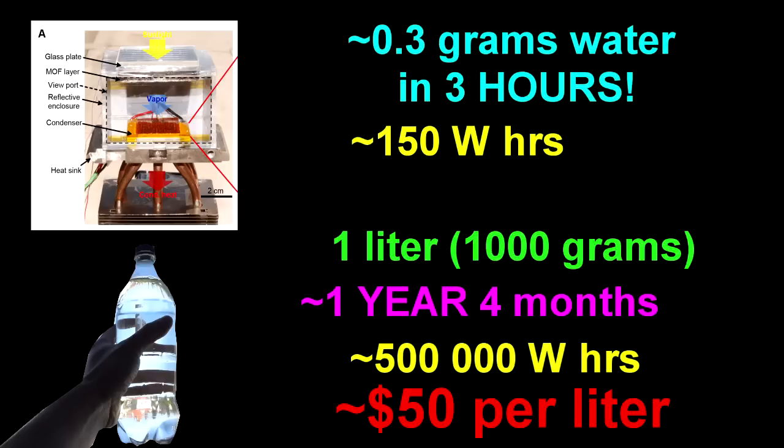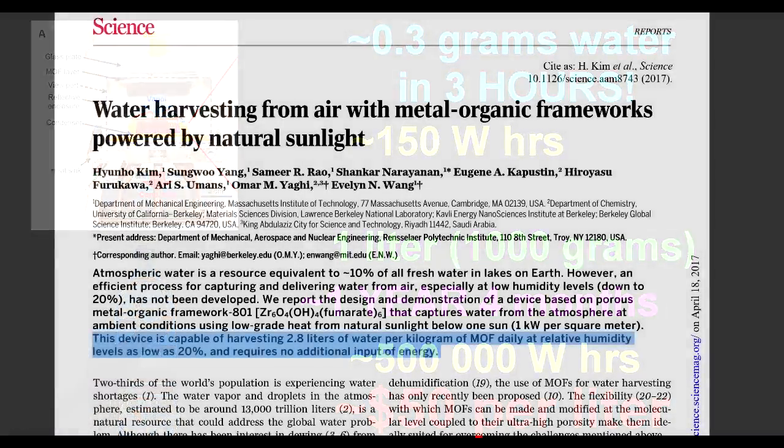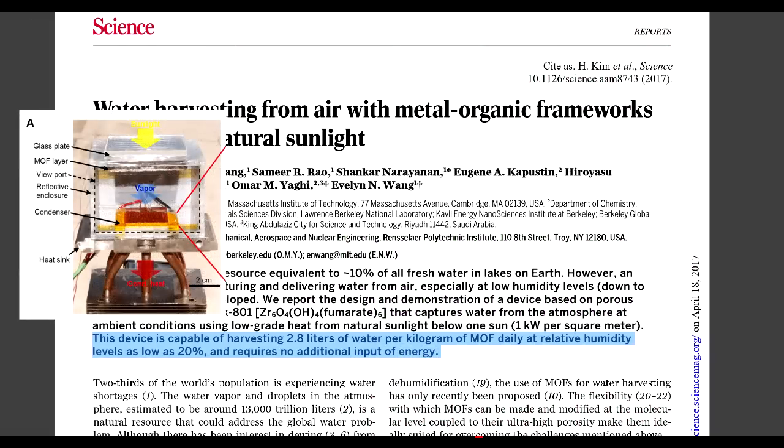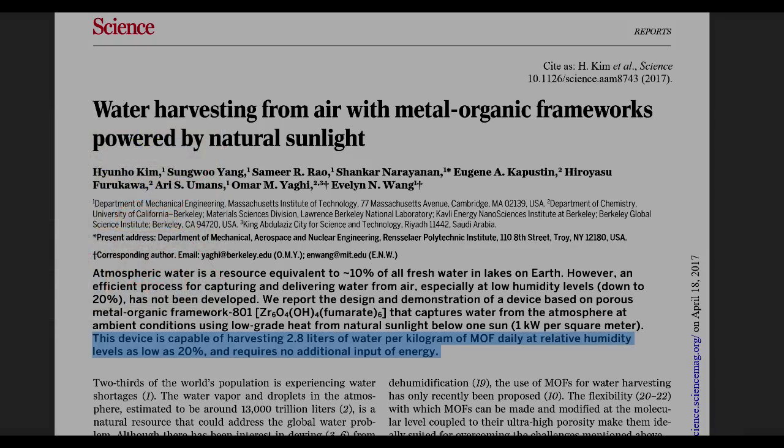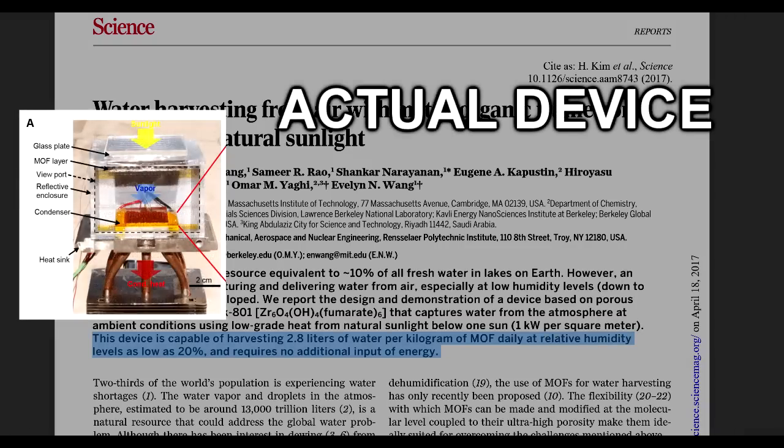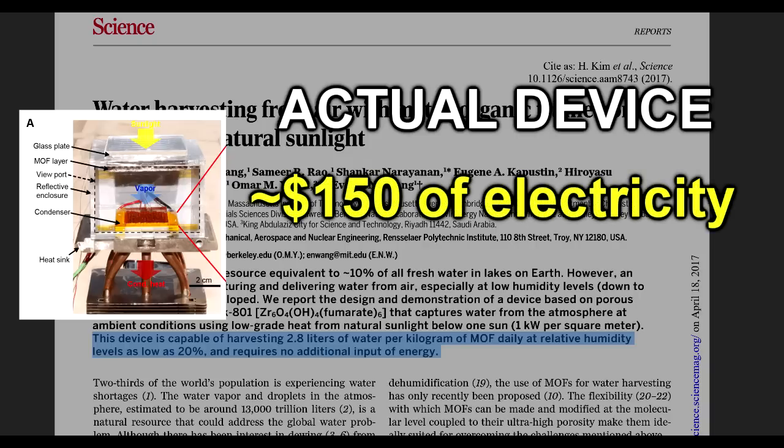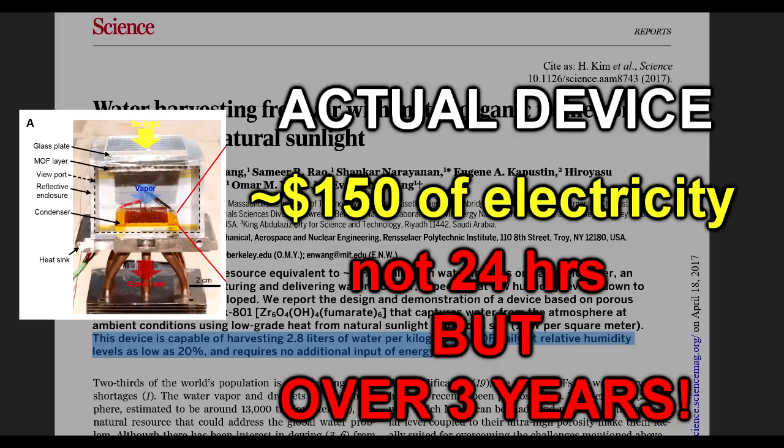Well, that's MIT, you know, guys, the world's top universities. I'm sure they're really going to crack getting water out of the air with a discovery like this. And how do they sell this device that can create one liter of water per year at a cost of about $50 per liter? You know, champagne type prices. They say that this device is capable of harvesting 2.8 liters of water per kilogram of metal oxide framework daily at relative humidities as low as 20% and requires no additional input of energy. Well, actually reality check for three liters, it would require a little more than no additional input of energy. It would require $150 worth of electricity. And you would have to wait for three years for your actual device to make this.